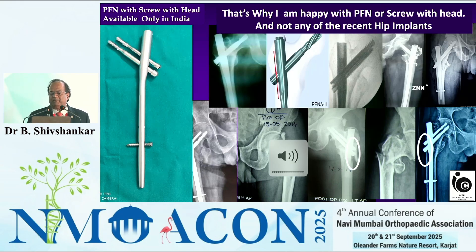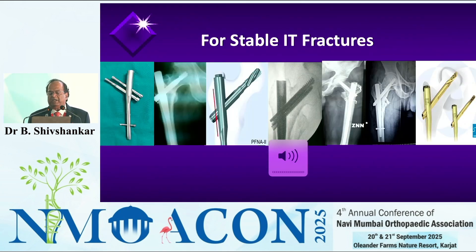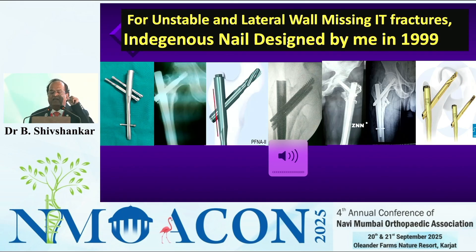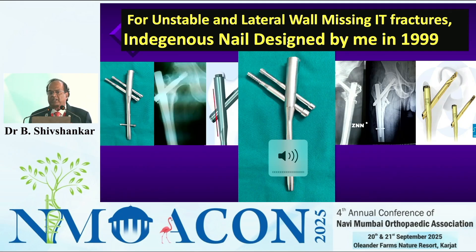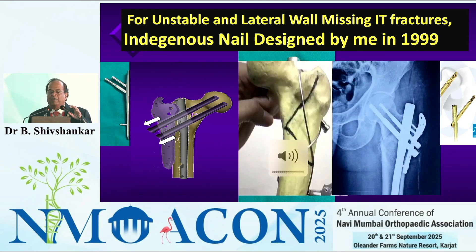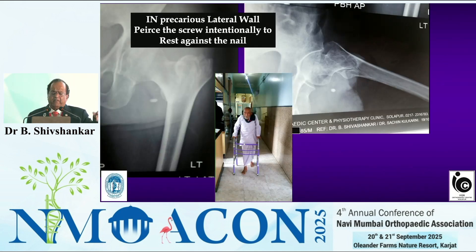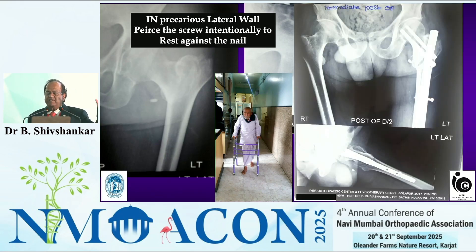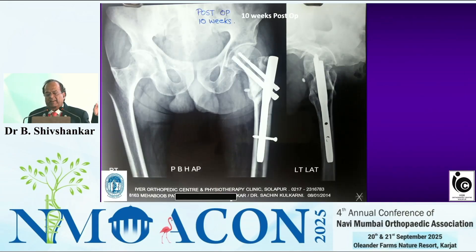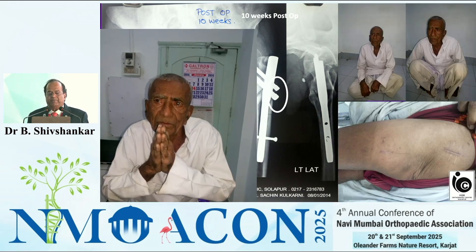None of the newer implants available in the market have got the head. So if you are using a headless screw it works well for a stable fracture, but if you are treating a fracture with a missing lateral wall, none of them work. Only the PFN with the neck screw having the lag head works for that. For unstable lateral-wall-missing fractures, the indigenous nail is very useful. For osteoporotic fractures I pierce the lateral wall intentionally on table and the screw head is supported by the nail, which prevents toggling.